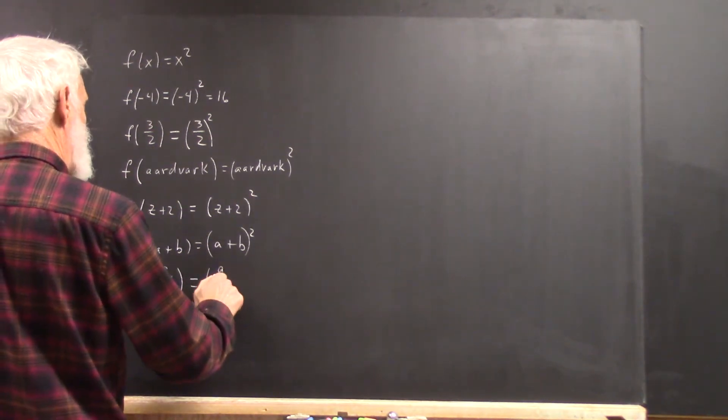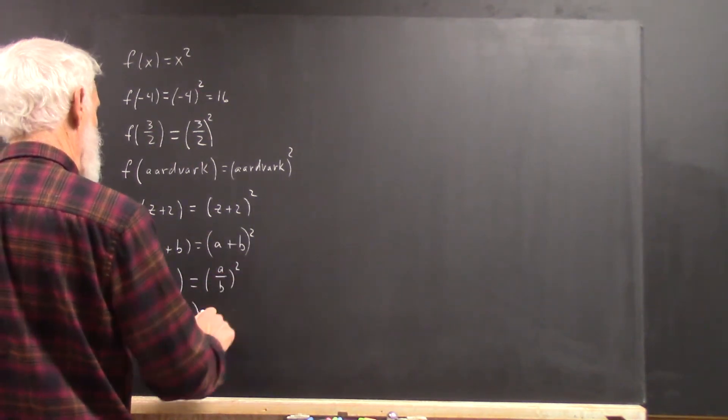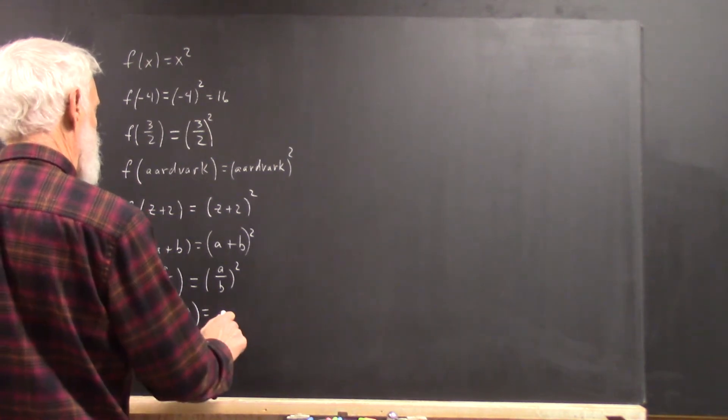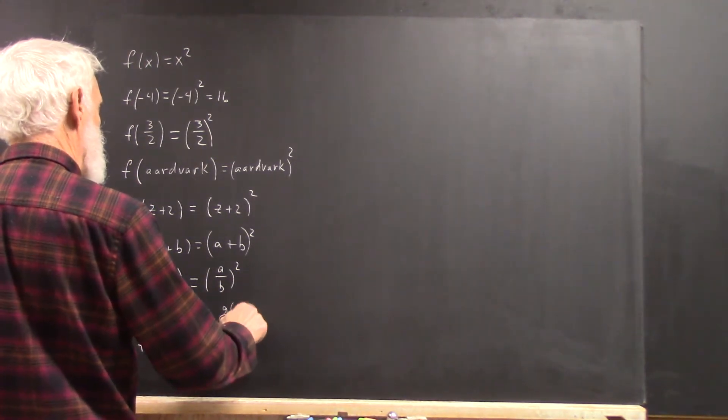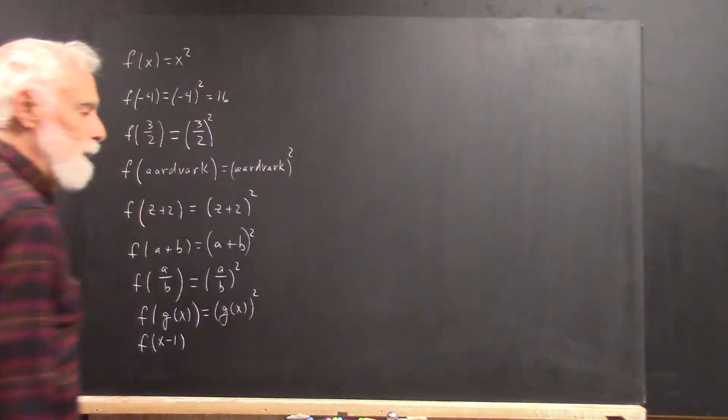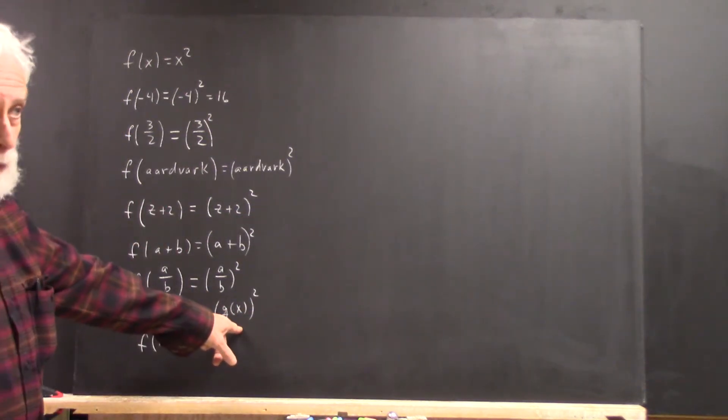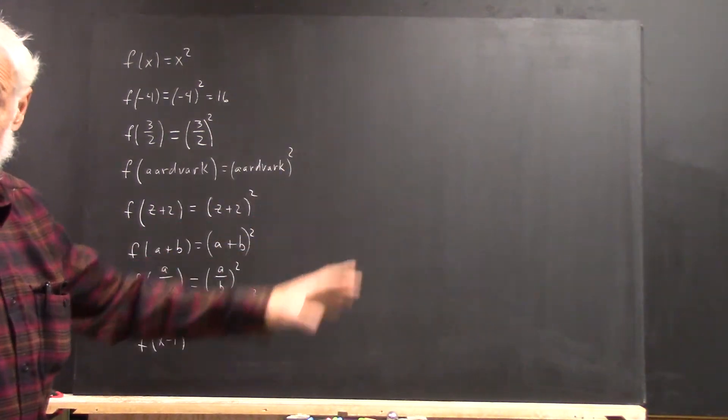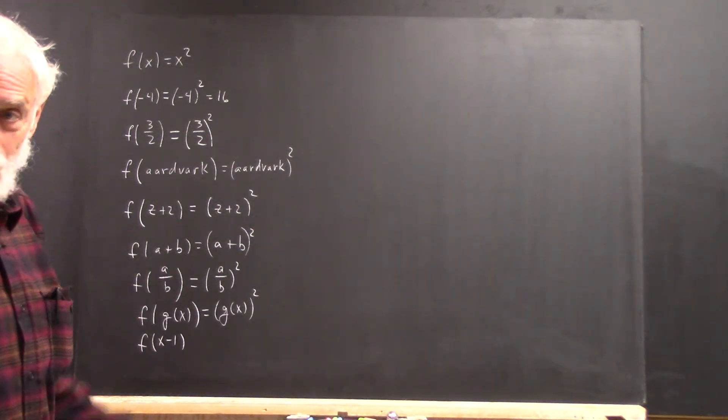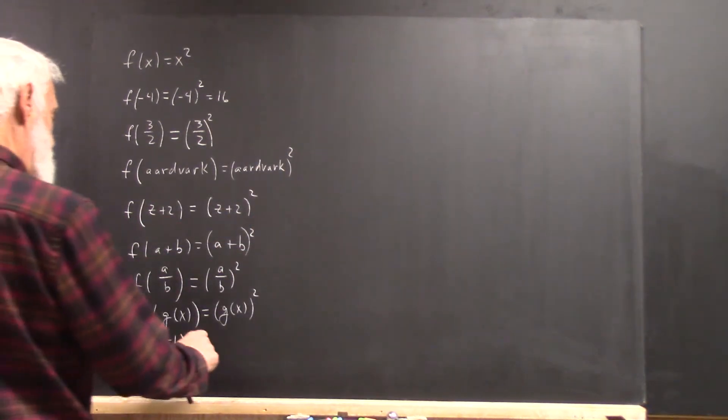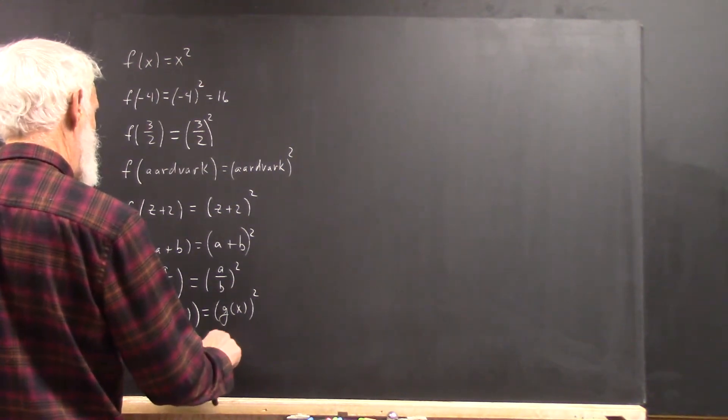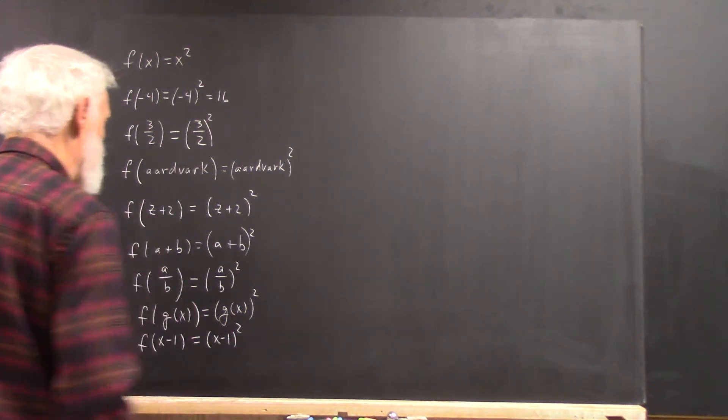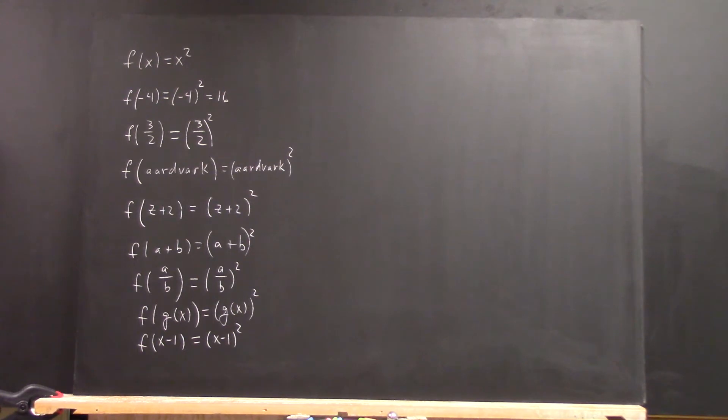Okay, and this is a over b squared, and this is g of x squared. If you have a formula for g of x you could then substitute that, and that would be a composite function coming along soon enough. We don't really need them right now so we're not going to do them yet. And this one is x minus 1 quantity squared.